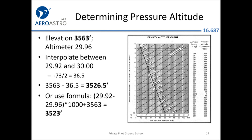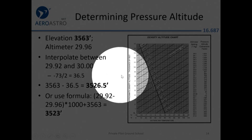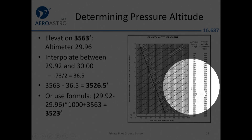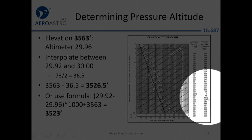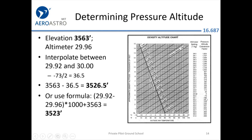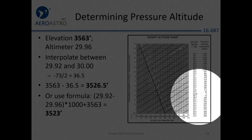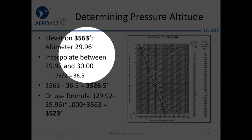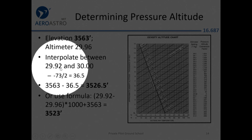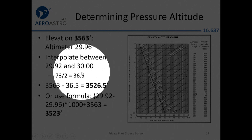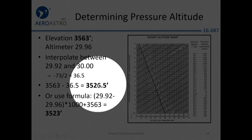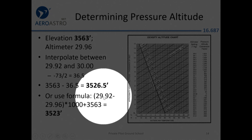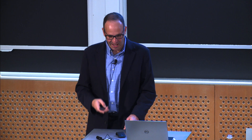You can calculate pressure altitude using a chart. They might give you a field elevation of 3,563 feet and an altimeter of 29.96 — just a little bit non-standard. We'd expect about a 40-foot difference from the table; interpolating gives us 36.5 feet, so the airplane feels as though it's at 3,526 feet above sea level, assuming temperature matches the ISA standard.